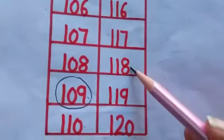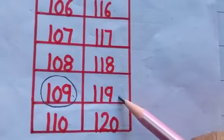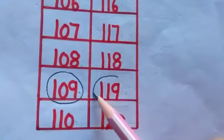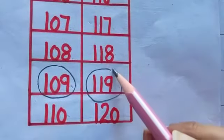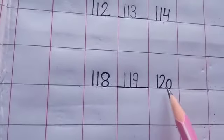Next. 118. Aap beech mein koi number nahi diya gaya? Aur 120. Aap dekho, aap 118 and 120 ke beech mein. Means, between. Kaun sa number hai? 119. Tau, wo yahan pe kya likhenge? 119. 118. 119. 120.